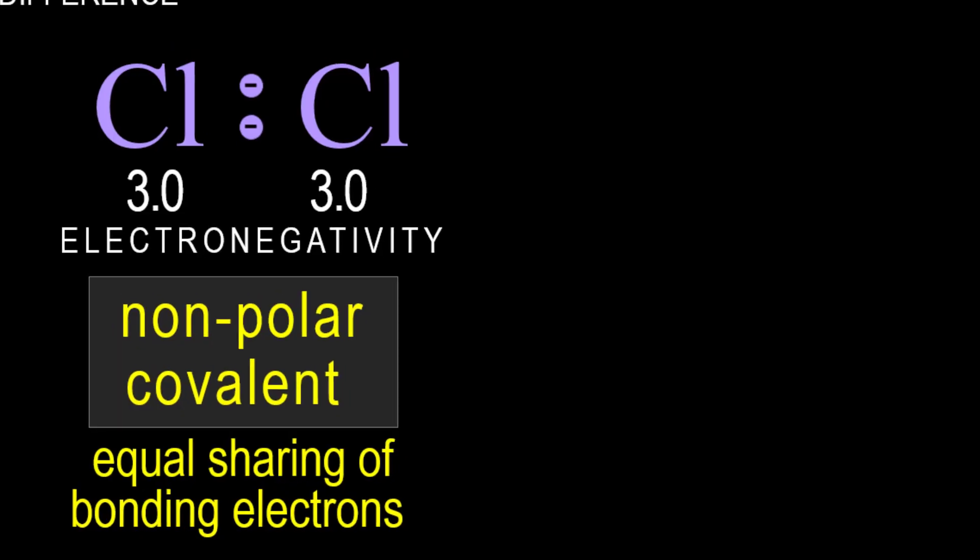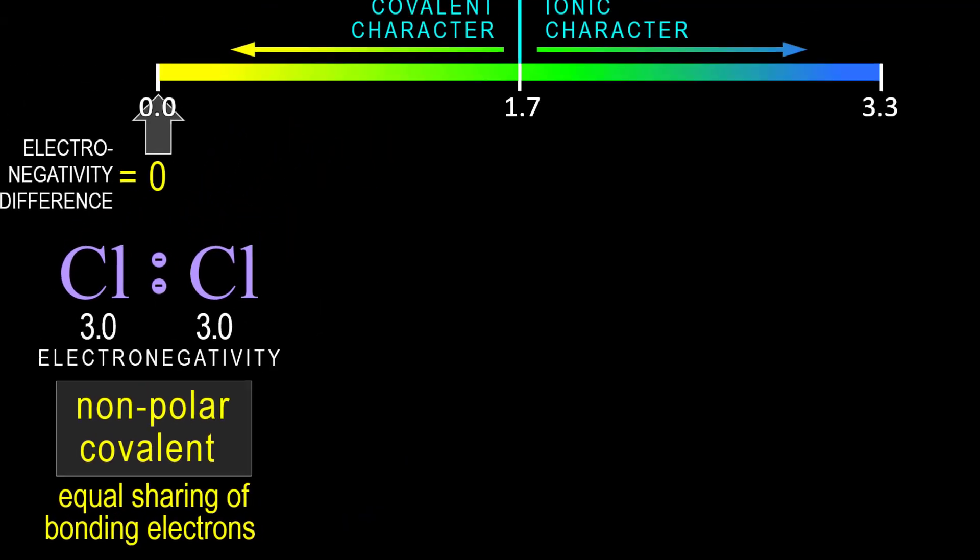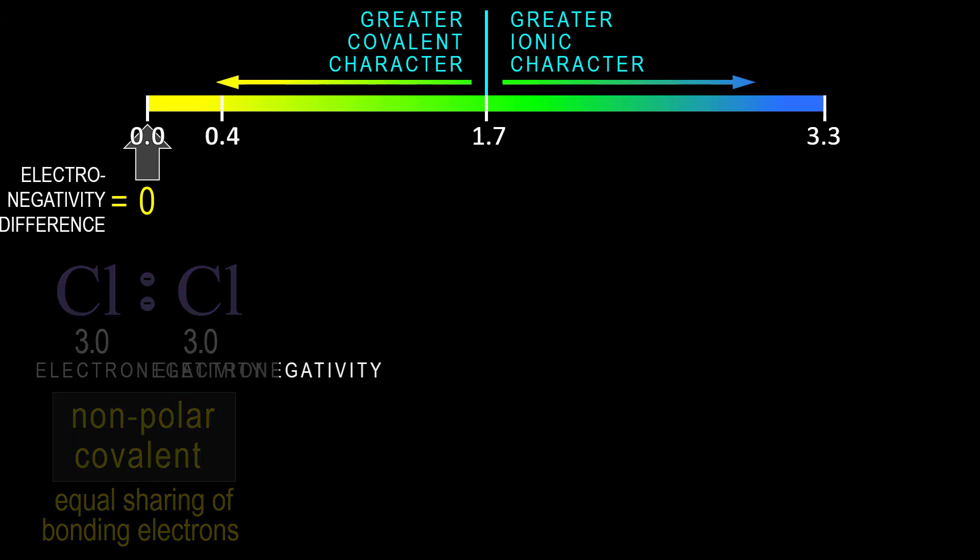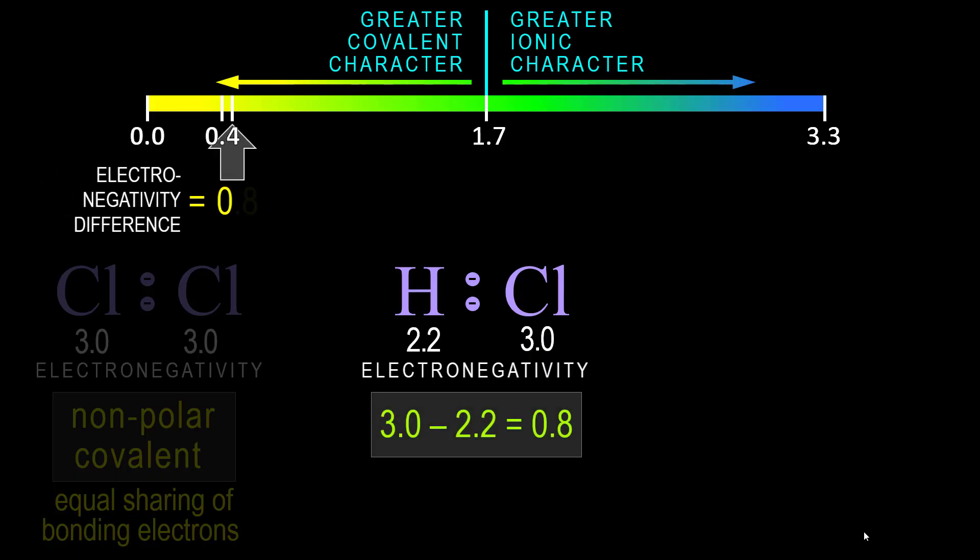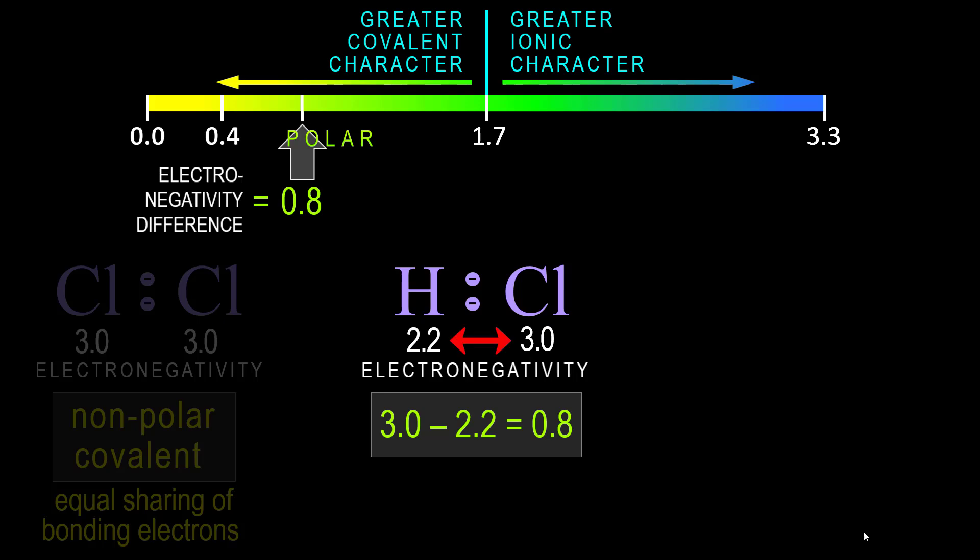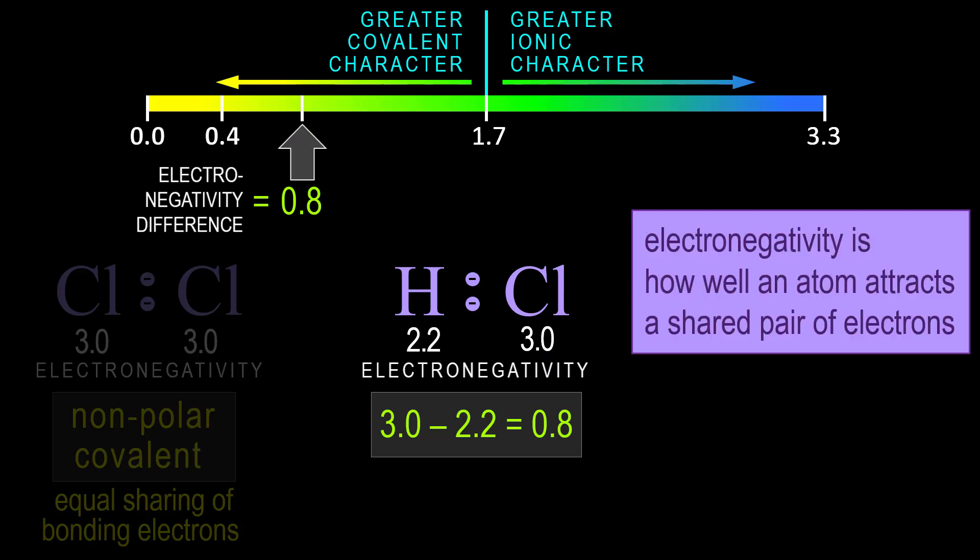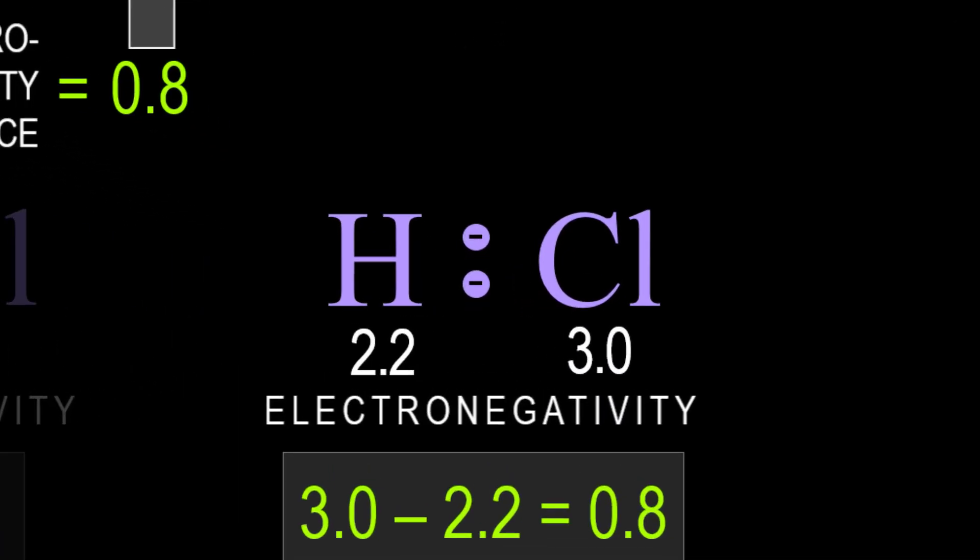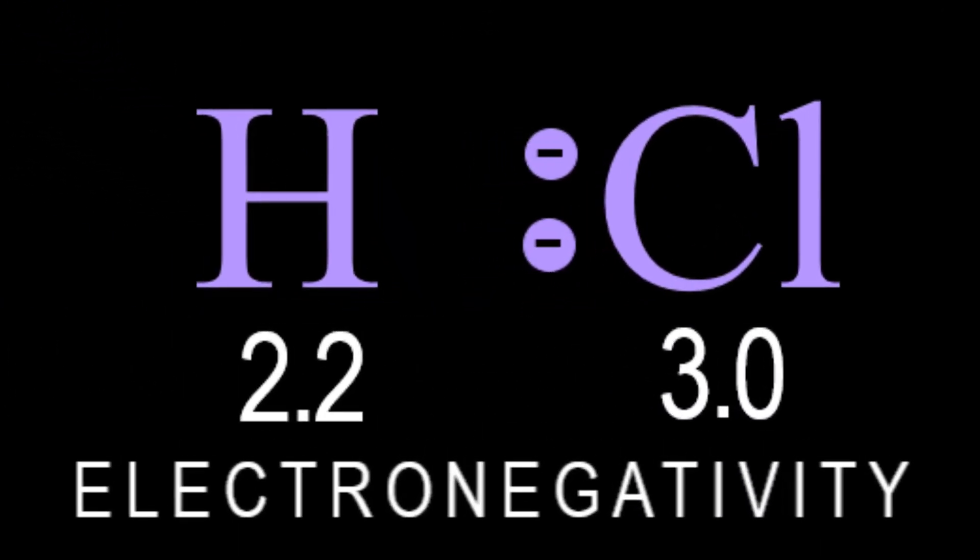Let's see how bonding different elements changes how electrons are shared. With hydrogen bonded to chlorine, the electronegativity difference is 0.8, a polar bond. Chlorine has a higher electronegativity than hydrogen, and remember that electronegativity is how well an atom attracts a shared pair of electrons. So a higher electronegativity is better at attracting shared electrons than a lower electronegativity.